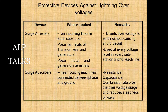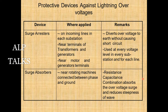Surge arresters are used at incoming lines in each substation, near terminals of transformers and generators, and near motor and generator terminals. They divert overvoltage to earth without causing a short circuit, and are used at every voltage level in the substation and for each line. Surge absorbers are also used near rotating machines — connected between phase and ground. The resistance-capacitance (RC) combination absorbs the overvoltage surge and reduces the steepness of the wave.